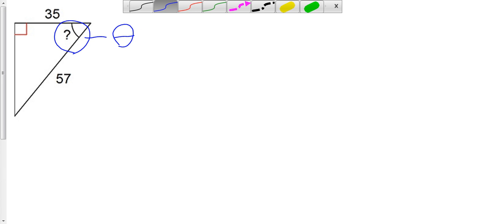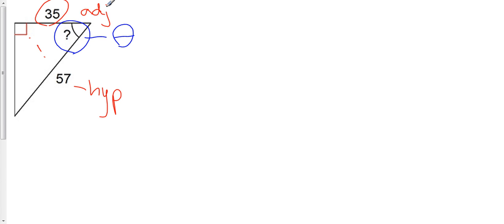I have my hypotenuse. My hypotenuse is the side that is always opposite the right angle in a right triangle. And this time I have the adjacent side. This is the adjacent side with respect to the angle of reference.